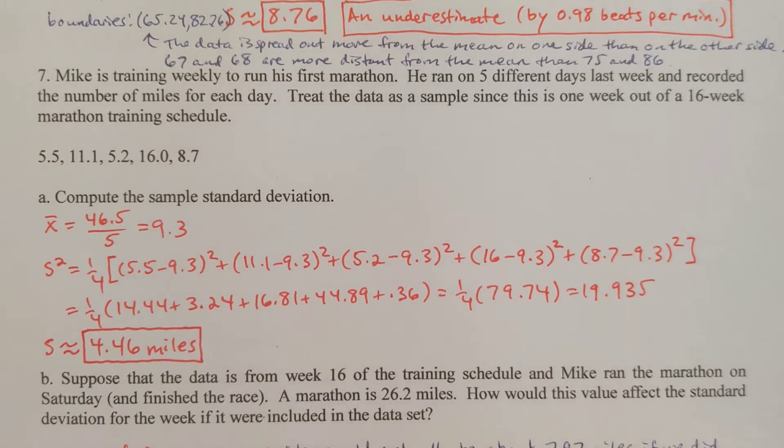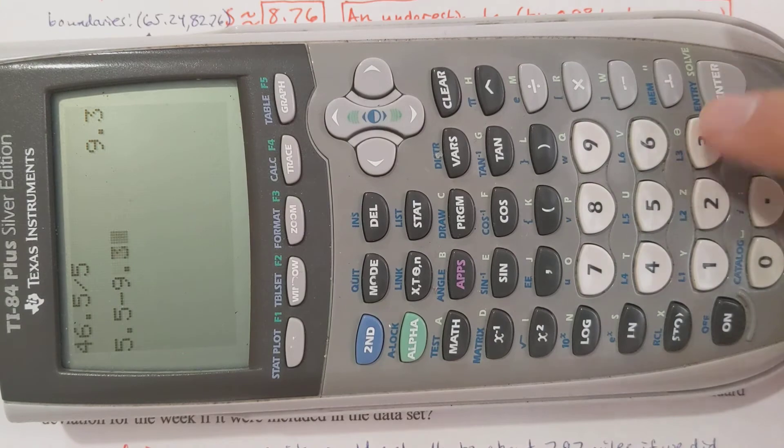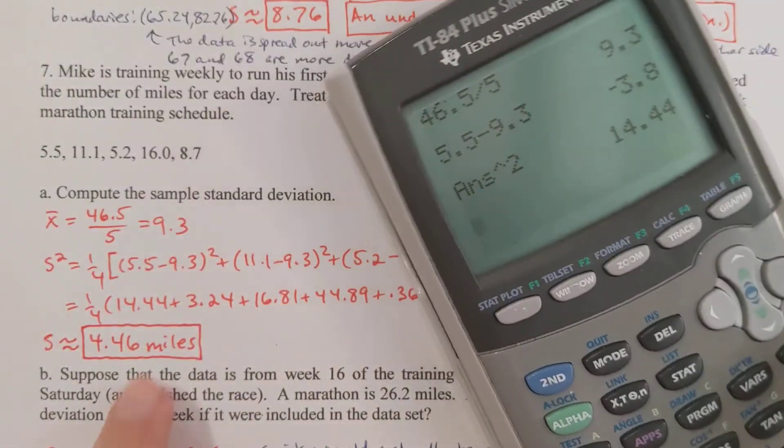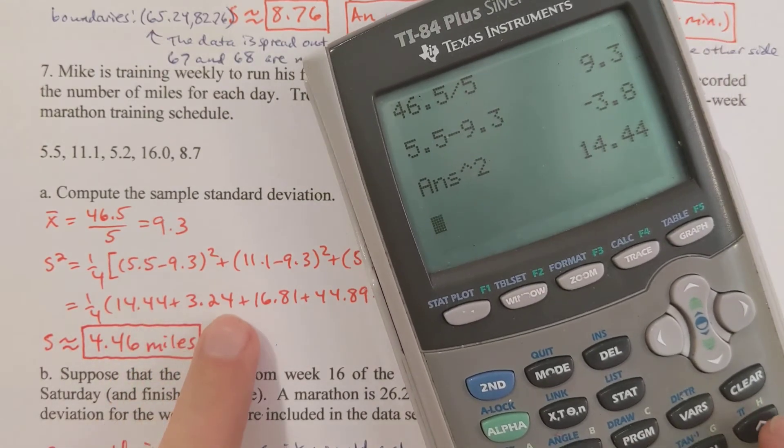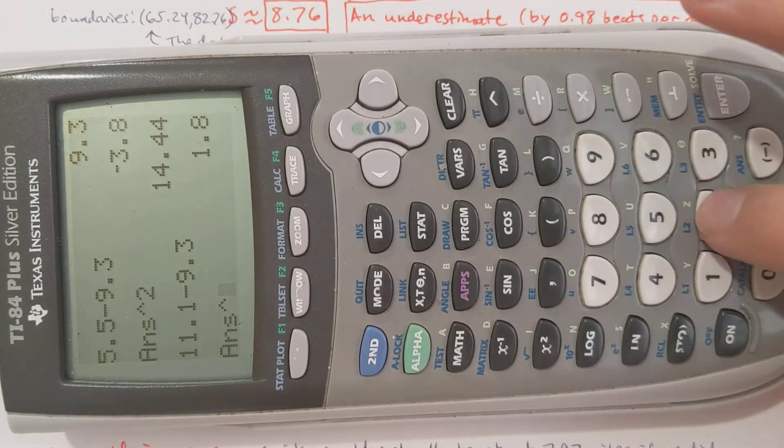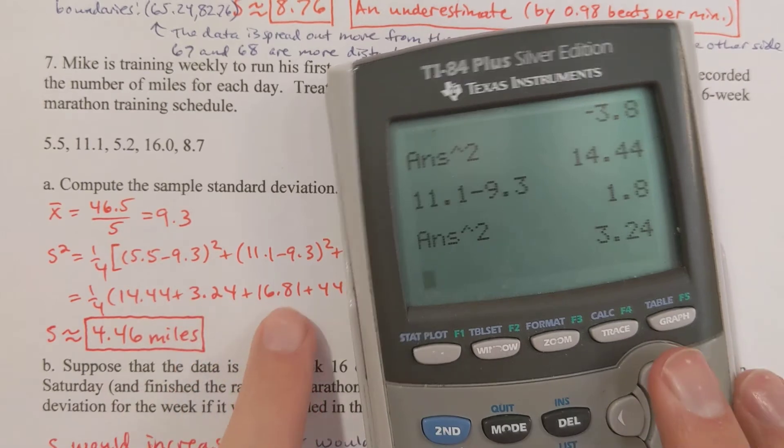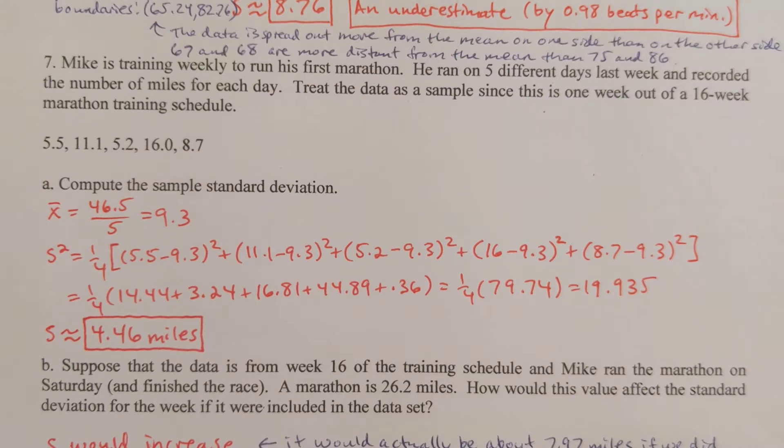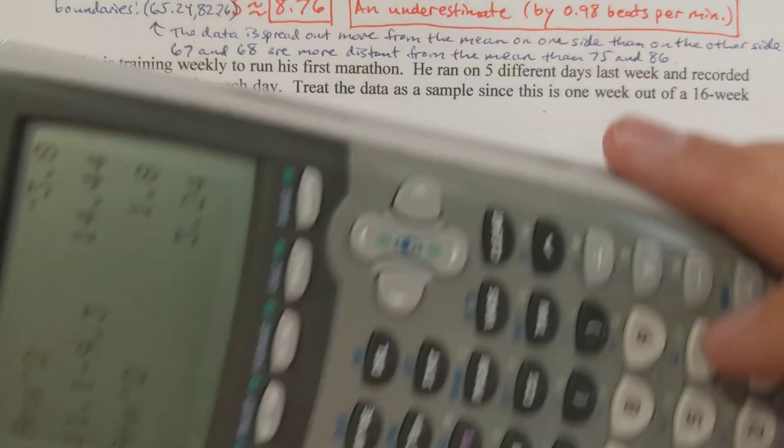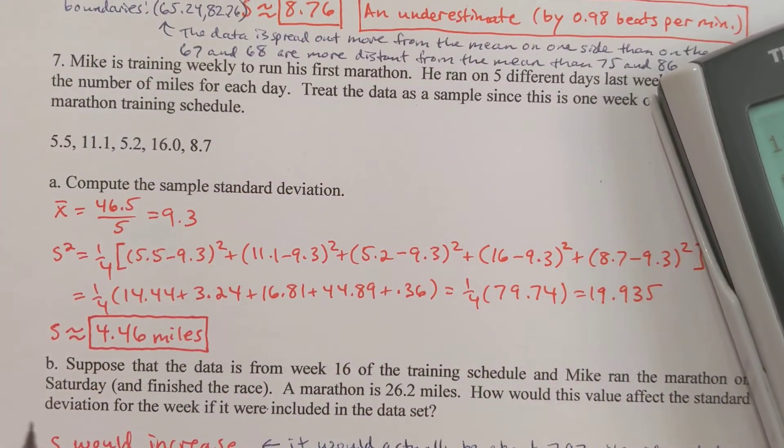I need to take each value minus the mean squared. The first value is 5.5 minus the mean 9.3 squared, plus 11.1 minus 9.3 squared, plus 5.2 minus 9.3 squared, plus 16 minus 9.3 squared, plus 8.7 minus 9.3 squared. When I add up these five numbers, I get 79.74 exactly, and I want to divide that by 4, so 79.74 divided by 4 gives me 19.935.